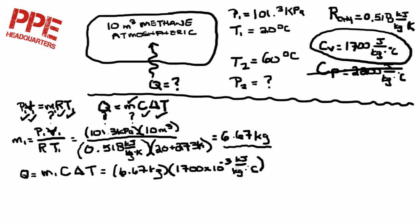If we look at this equation, we're using a temperature difference. Our mass we calculated to 6.67 kg times our coefficient at a constant volume, which is 1700. Watch our units here, folks: 1700 times 10 to the negative 3, just moving the decimal spot three spots back to give us the units of kilojoule rather than joule per kilogram. Notice that we're talking about a temperature difference. Our temperature is 60 minus 20 equals 40 degrees. That gives us 453.56 kilojoules.